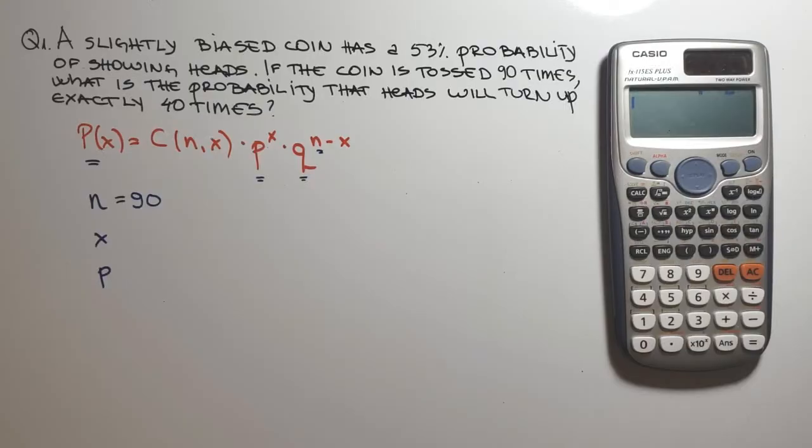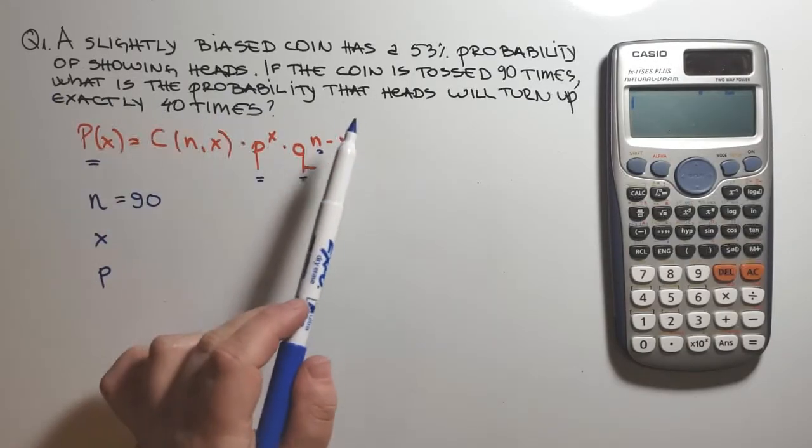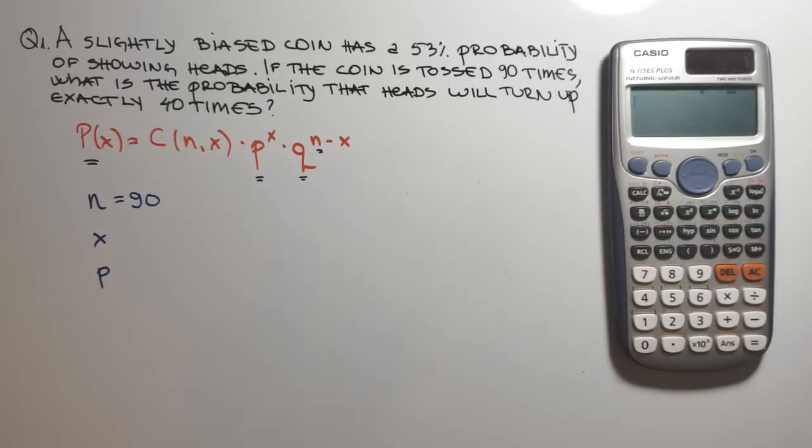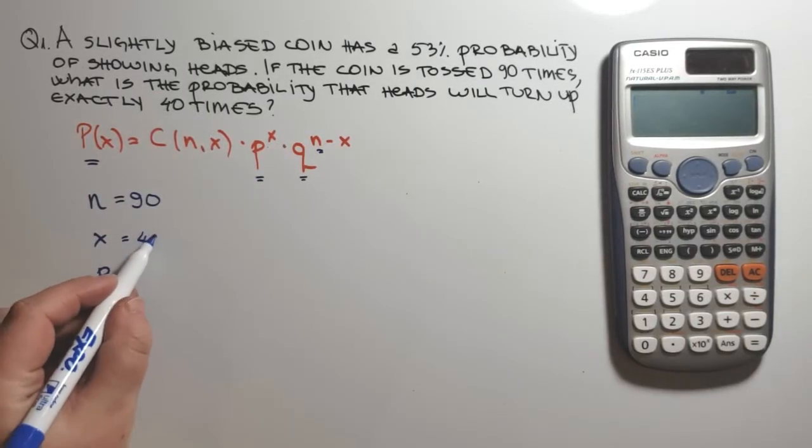How many successful events are we getting in the problem? What is the probability that heads will turn up exactly 40 times? So for X, we have 40.